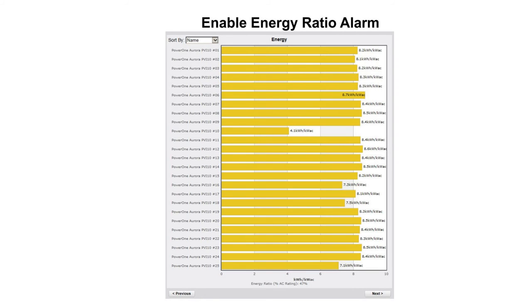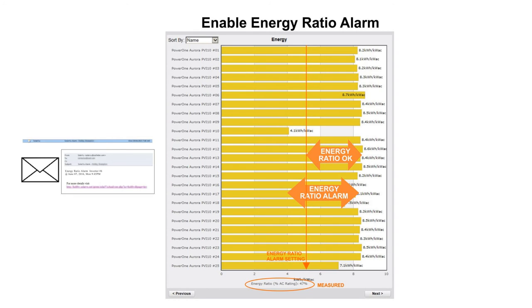To save having to frequently access the SolarView portal and inspect the output graphs, SolarView has an energy ratio alarm that can be set to email a warning when a potential problem is detected. Log in to setup with the site username and password to enter a suitable alarm level that is less than the normal variation between inverters. At the end of each day, SolarView will check and email a warning if it detects an energy ratio below the alarm setting. With automatic analysis, problems are detected immediately and fewer routine system checks are required.